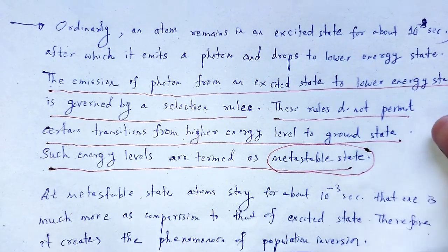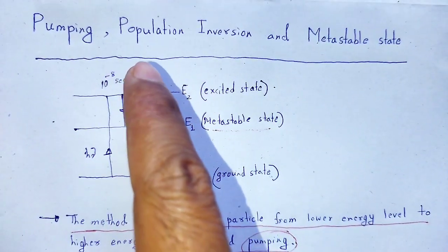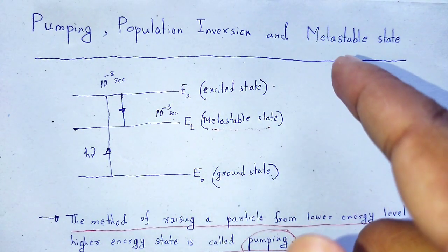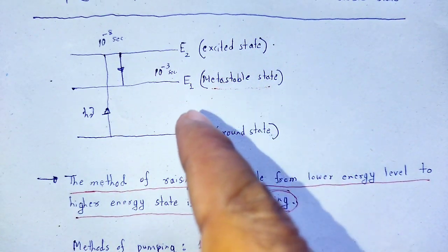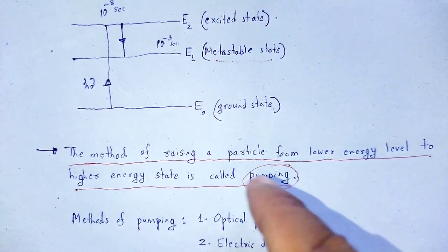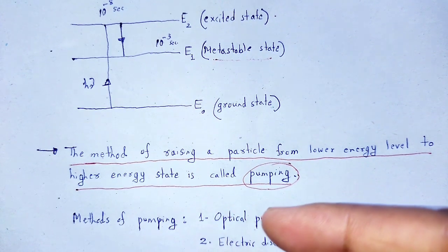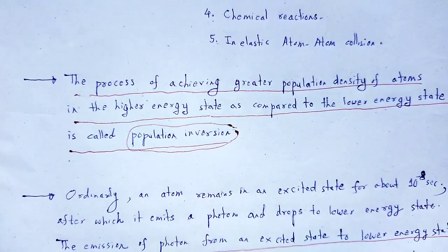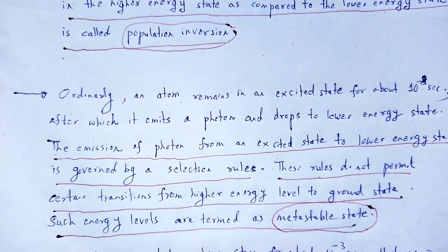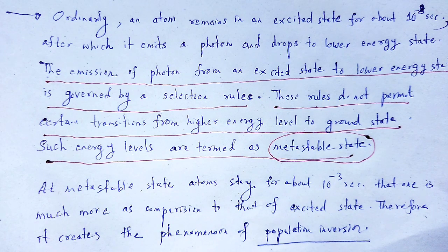So, with the help of this video lecture we understood three concepts: one is pumping, another is population inversion, and the next is metastable state. We took an atomic system having discrete energy levels. Pumping is the method to raise a particle from lower energy level to its higher energy state. Then population inversion, and finally the idea of metastable state and why population inversion takes place. With these useful notes, let me wind up this session. Thank you.